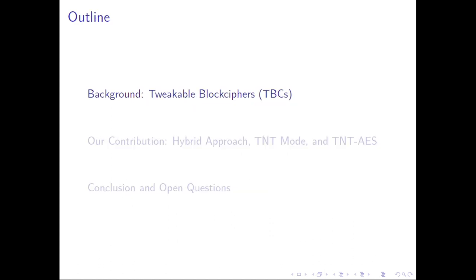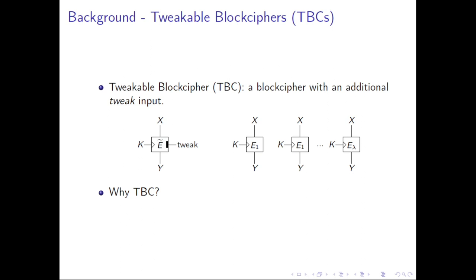Based on AES, we propose an instance named TNT-AES. See this picture. In this instance, the three permutations are instantiated by six round AES functions. Its performance, as we evaluate, is among the best in both hardware and software. Let's see the details. My talk will follow this structure. Let's first recall the notion of tweakable block ciphers.